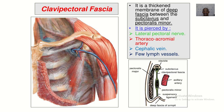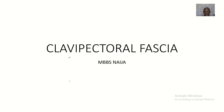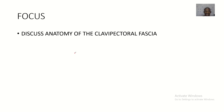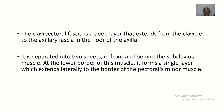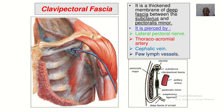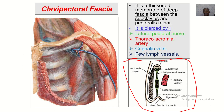Moving on in our upper limb lectures, we'll be talking about the clavipectoral fascia. The focus for this lecture is to discuss the anatomy of the clavipectoral fascia. I'll be using a sagittal view to illustrate it. The clavipectoral fascia is a big layer that extends from the clavicle to the axillary fascia of the floor of the axilla.